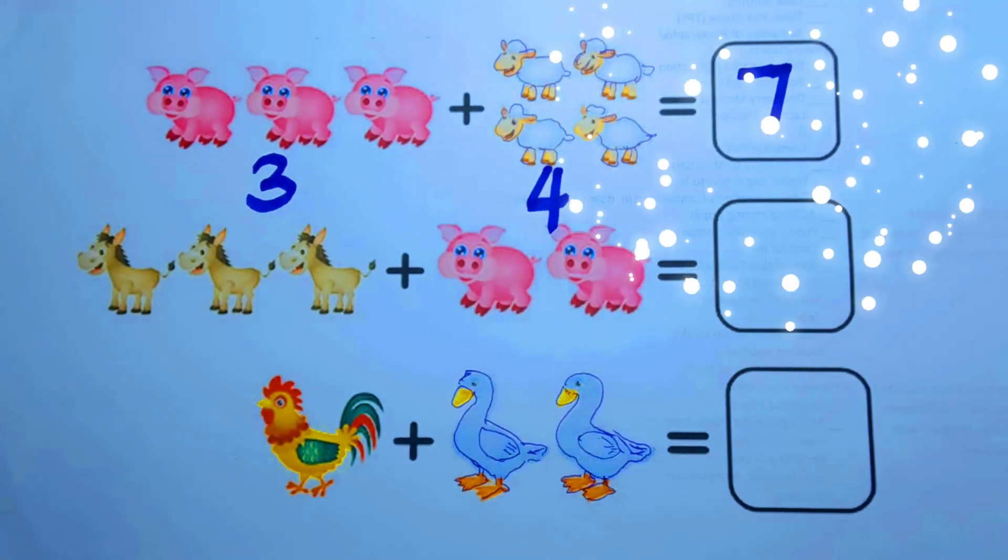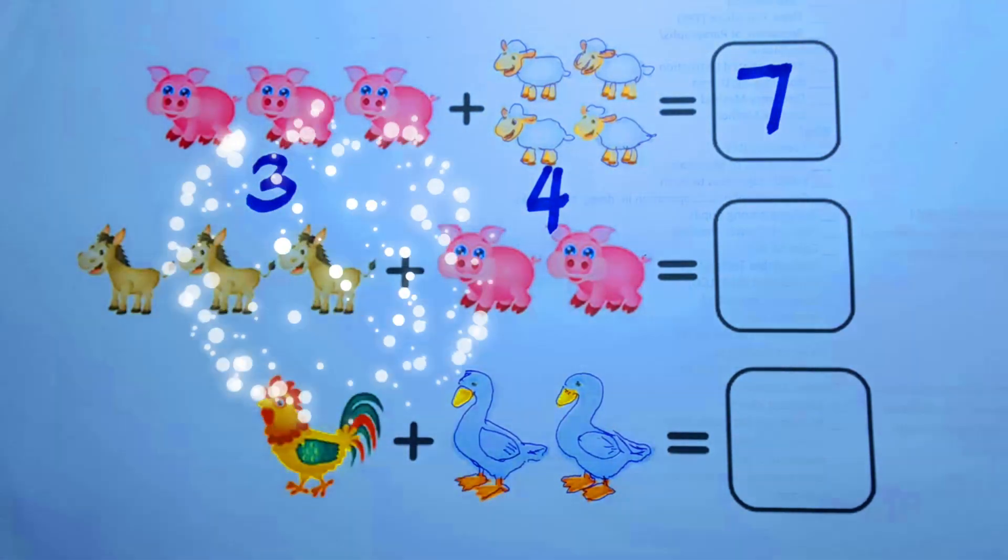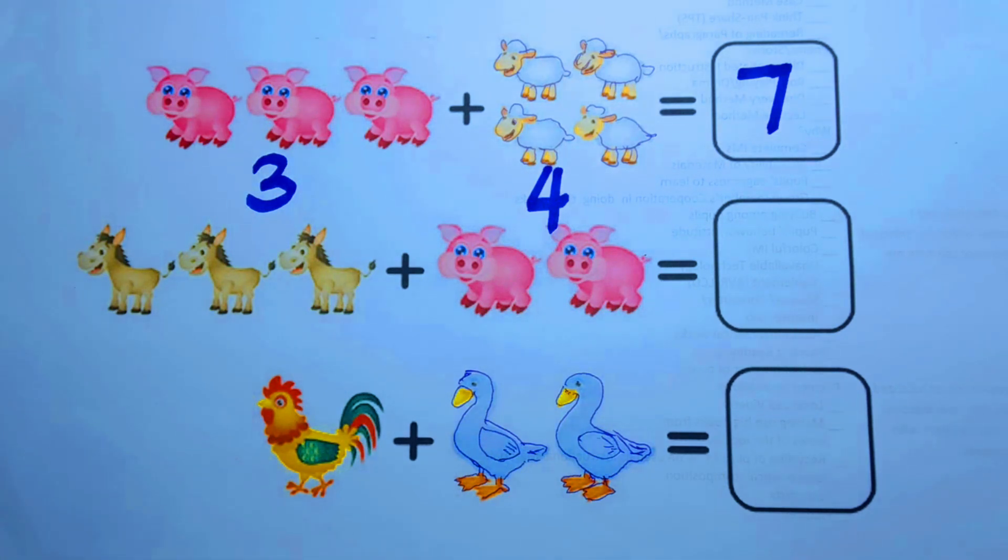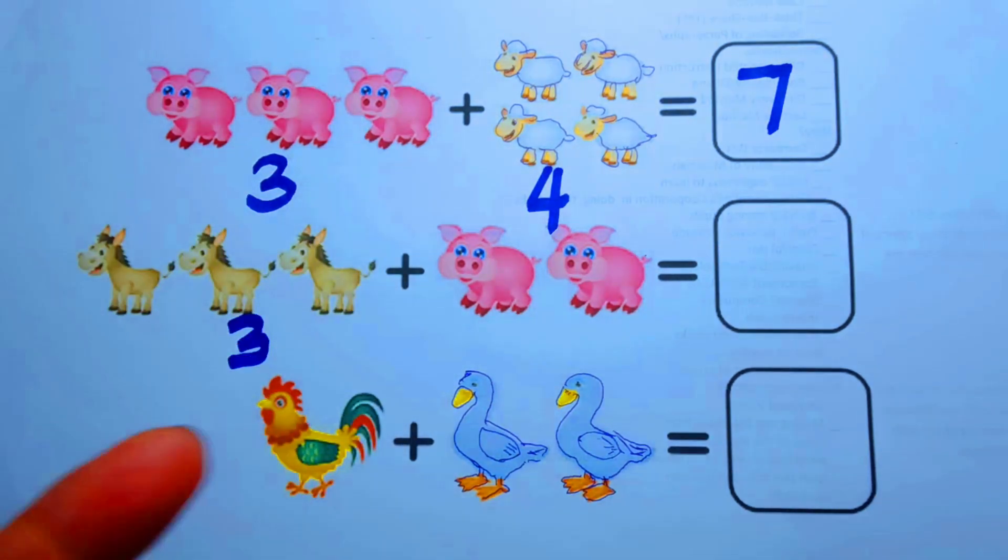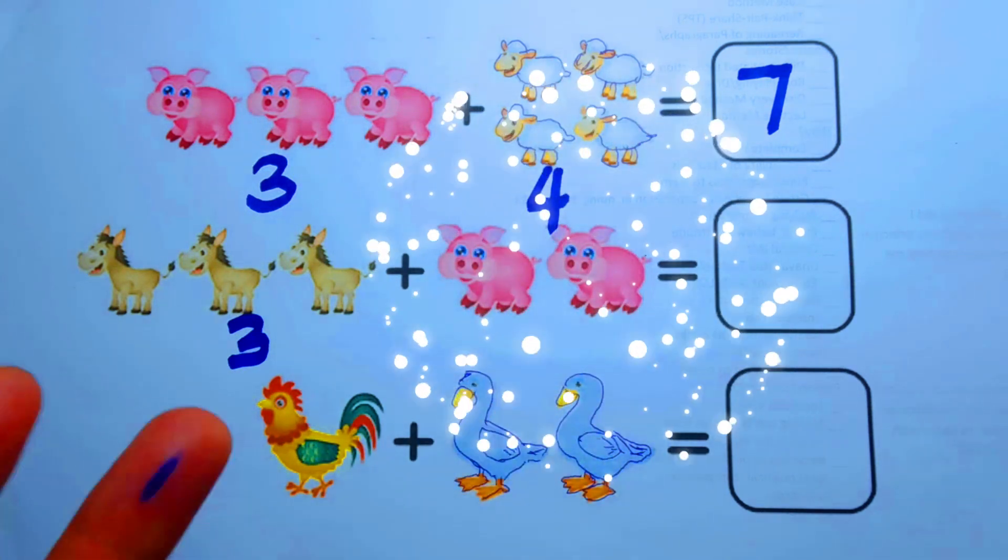Now, let's proceed to the donkeys. One, two, three. Three donkeys. Let's write the number three. And the piglets. One, two. Two piglets.